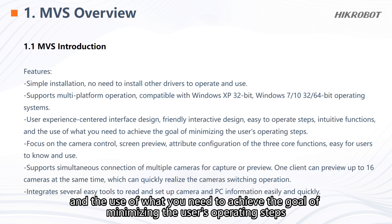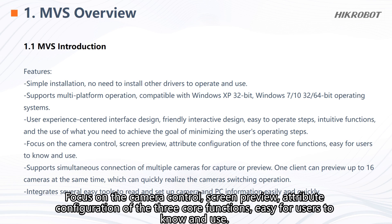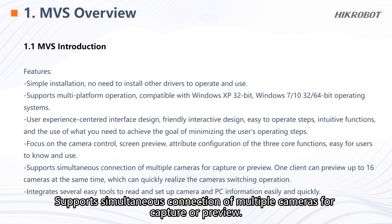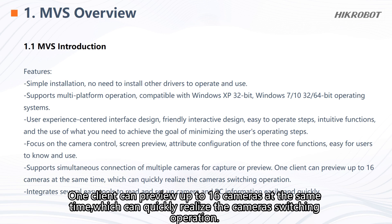MVS uses intuitive functions to achieve the goal of minimizing the user's operating steps, focusing on camera control, screen preview, and attribute configuration as the three core functions — easy for users to know and use. It supports simultaneous connection of multiple cameras for capture or preview; one client can preview up to 16 cameras at the same time, and can quickly realize camera switching operations.